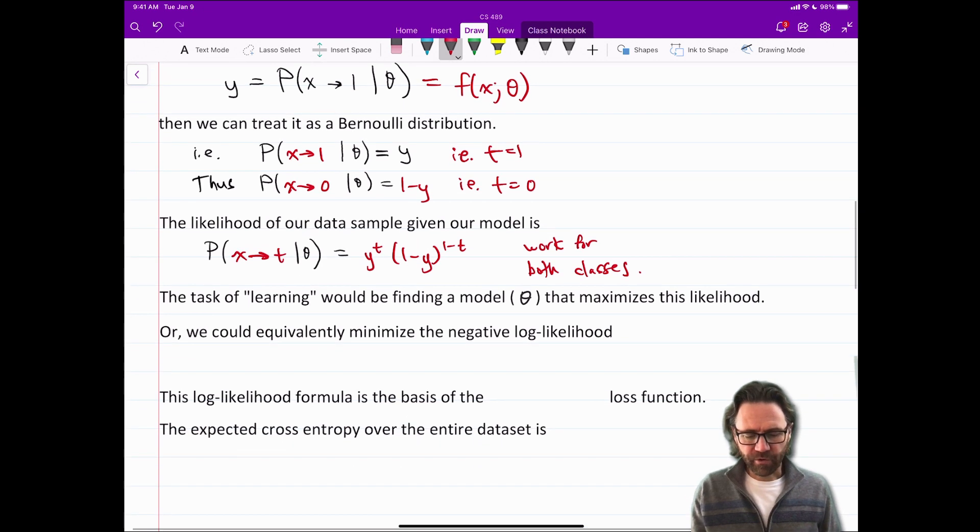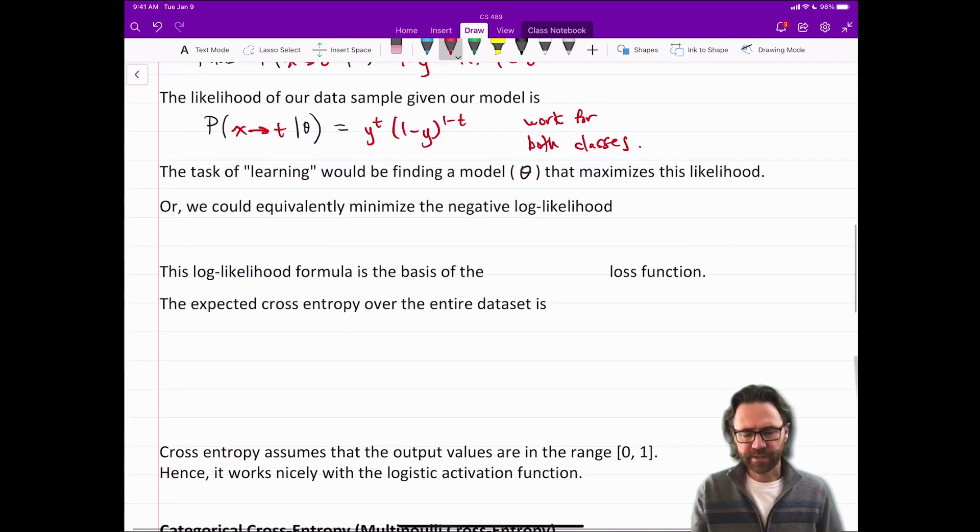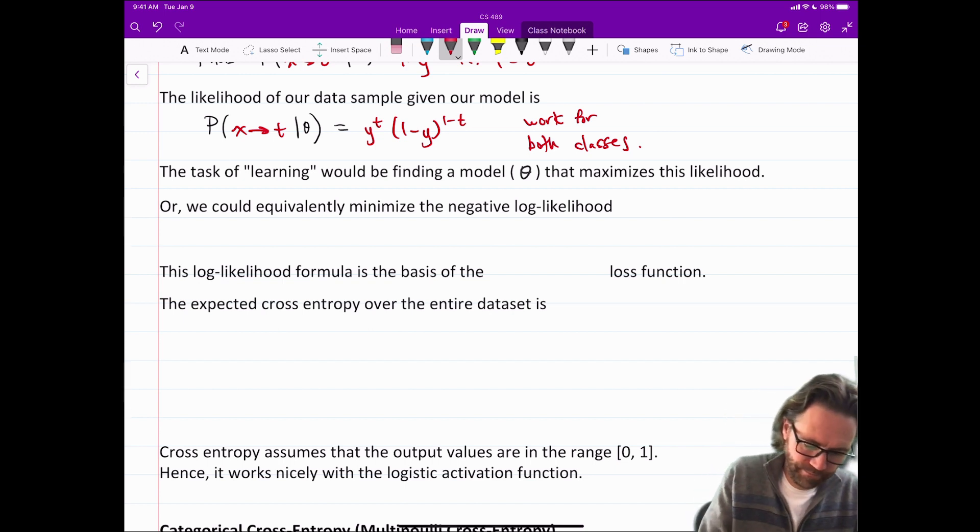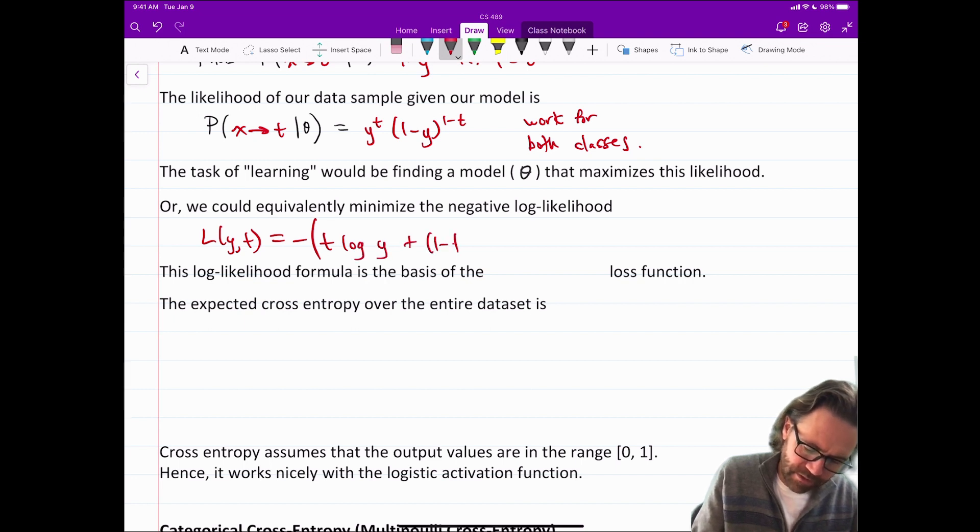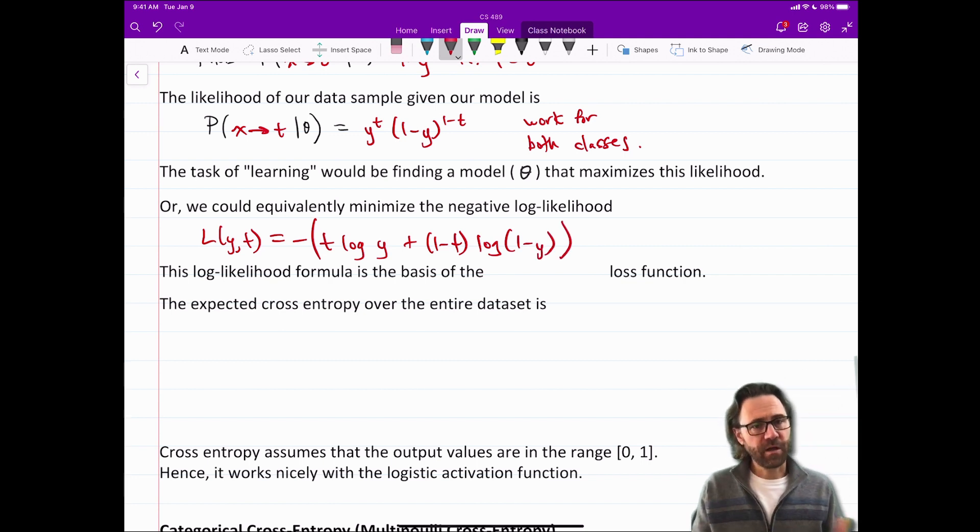Okay now the task of learning would be finding the model or the set of parameters theta that maximizes this likelihood or we could equivalently minimize the negative log likelihood which is what the cross entropy is. So L of Y T is, we take the log of that and you get something that looks like this: T log Y plus one minus T log one minus Y. And this log likelihood formula is the basis of the cross entropy loss function.